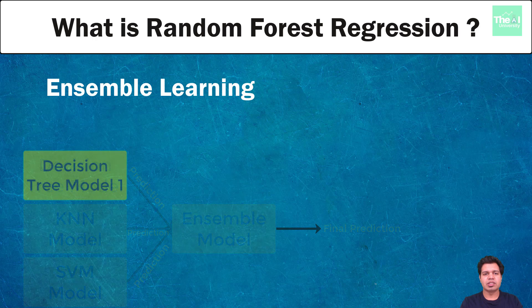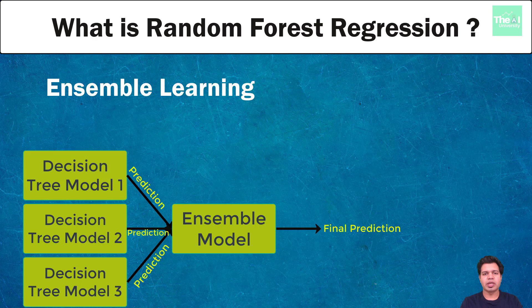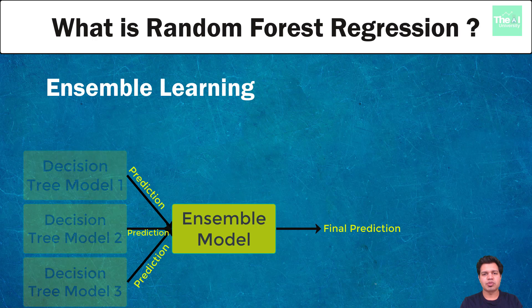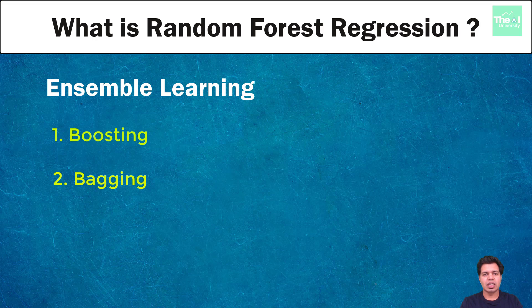Similarly, we can have several decision trees trained together to get a final combined prediction. Ensemble learning comes in two flavors: number one is boosting and number two is bagging. In boosting, learners are learned sequentially with early learners fitting simple models to the data and then analyzing data for errors.